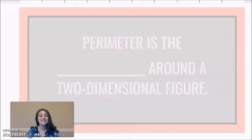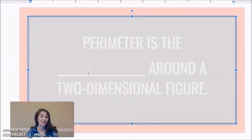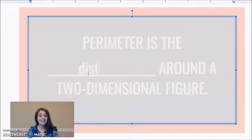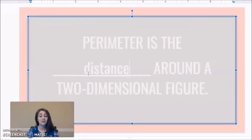Perimeter is the distance around a two-dimensional figure. You should already have these notes from I think February 28th. If you don't, you can go ahead and grab your math notebook and put them in again. Perimeter is the distance around a two-dimensional figure.